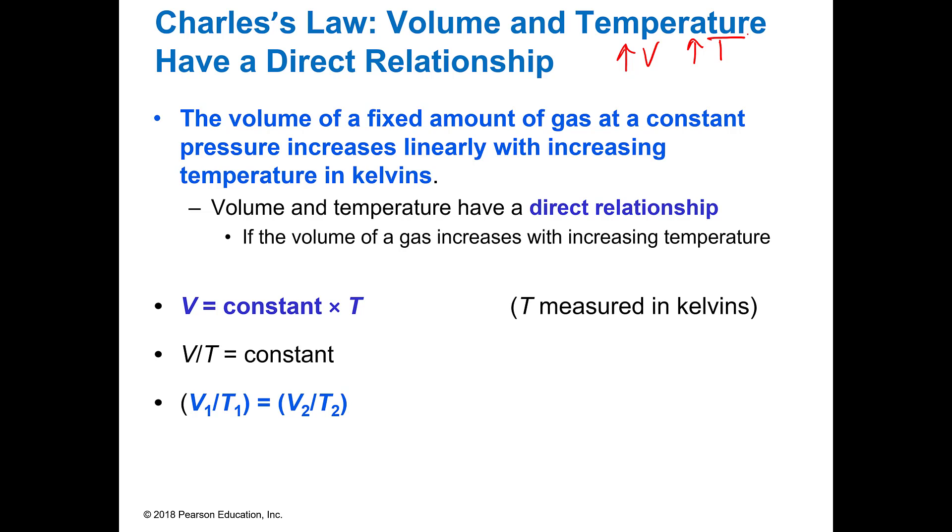The volume of a fixed amount of gas at a constant pressure, because the other two things have to be held constant, increases linearly when you increase the temperature in Kelvins. Remember it's got to be in Kelvin, and that's C plus 273.